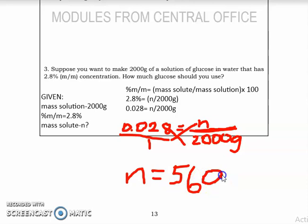I'm sorry for my handwriting, I cannot control it. As a sort of check, you may just say 56 divided by 2,000 times 100. Your answer should arrive at 2.8%, and it's correct.